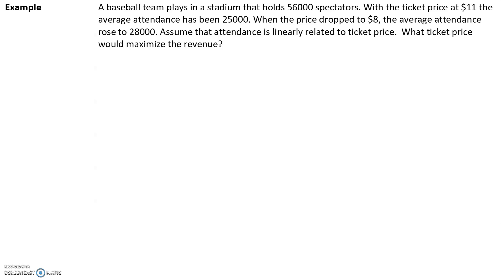Next example. A baseball team plays in a stadium that holds 56,000 spectators — that's kind of irrelevant so we'll cross that out. With the ticket price at $11, the average attendance has been 25,000, and when the price dropped to $8, attendance rose to 28,000. If the price decreases, more people will show up. Assume attendance is linearly related to ticket price. What ticket price would maximize the revenue?